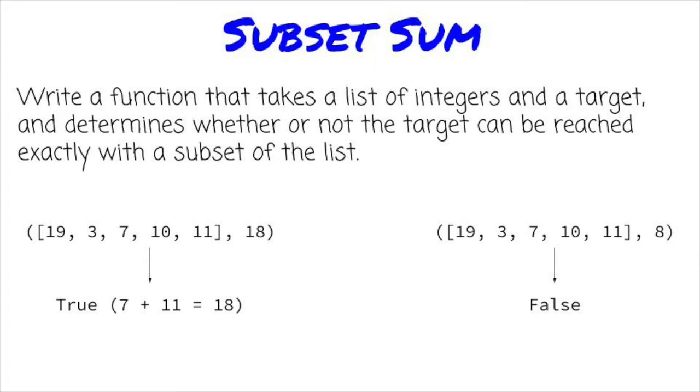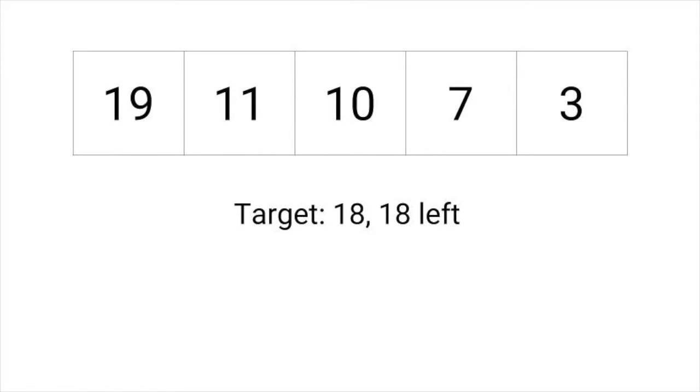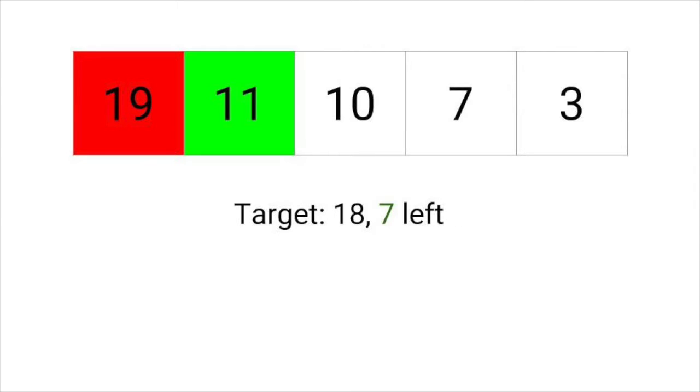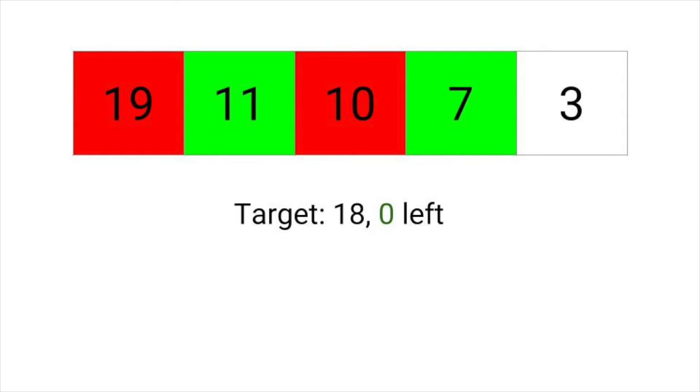How do we solve this? First, let's look at a greedy solution. We sort the items from largest to smallest, and go through the items, putting in items where we have capacity. For example, our sack has 18 units of space. The 19 doesn't fit, but the 11 does, leaving us with 7 space left. The 10 doesn't fit, but the 7 does fit perfectly, and we have our answer.